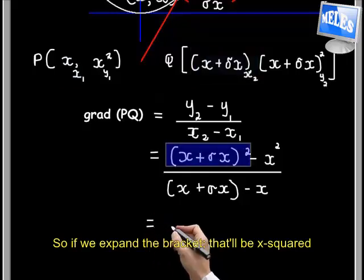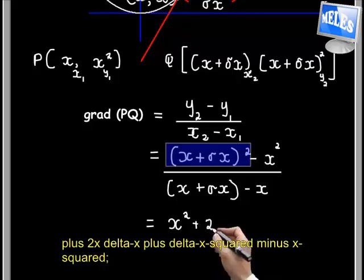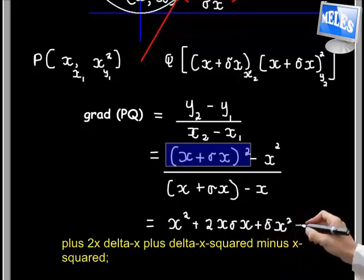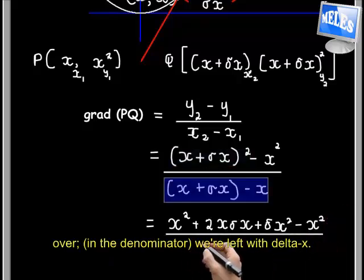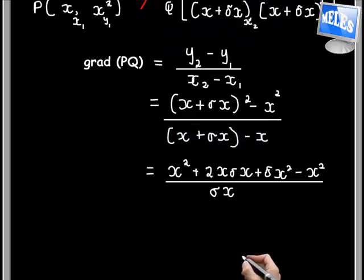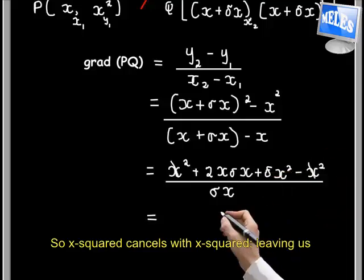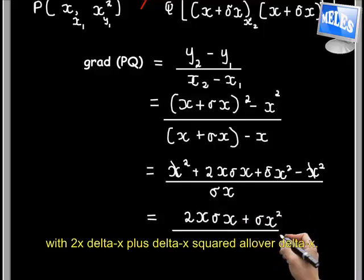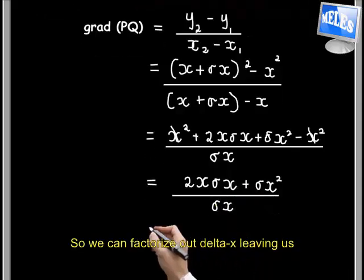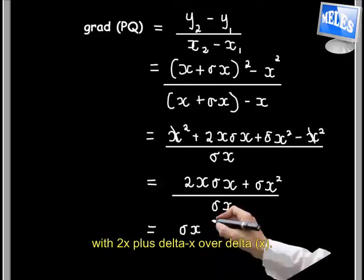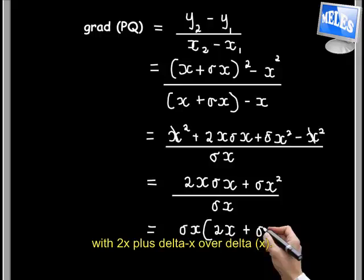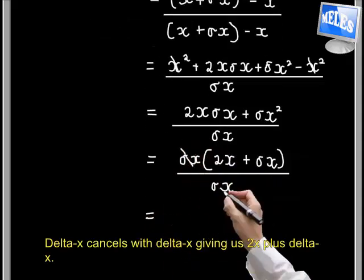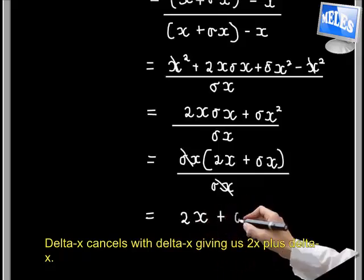So if we expand the bracket that will be x squared plus 2x delta x plus delta x squared minus x squared, over the denominator we are left with delta x. So x squared cancels with x squared, leaving us with 2x delta x plus delta x squared all over delta x. So we can factorize out delta x, leaving us with 2x plus delta x over delta x. Delta x cancels with delta x giving us 2x plus delta x.